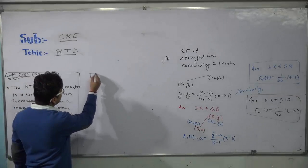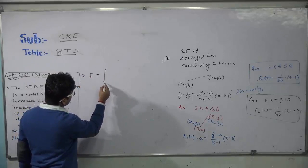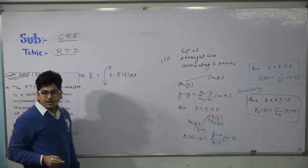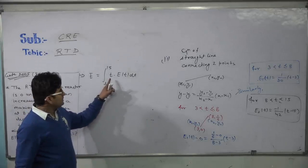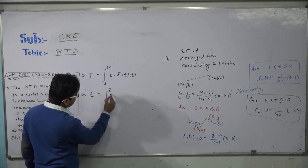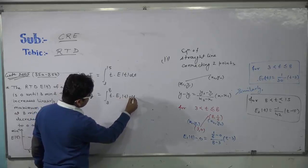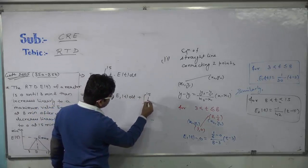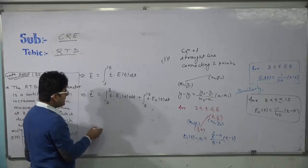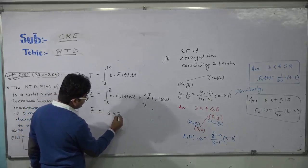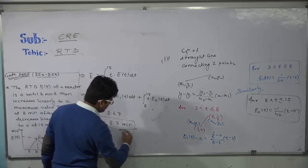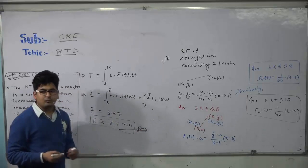For this case, t-bar = integral from 3 to 15 of t·E(t)dt. Since E is split into two parts, you write: t-bar = integral from 3 to 8 of t·E₁(t)dt + integral from 8 to 15 of t·E₂(t)dt. Substituting the equations E₁ and E₂ and evaluating, the answer comes out to be approximately 8.67 minutes, which is approximately 8.7 minutes.